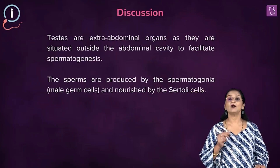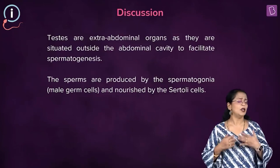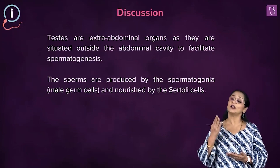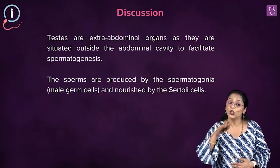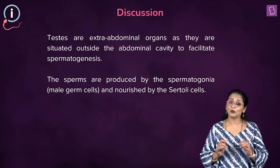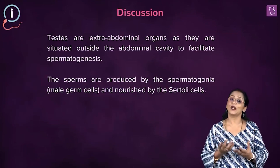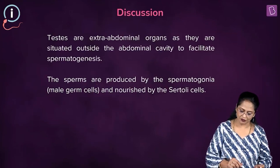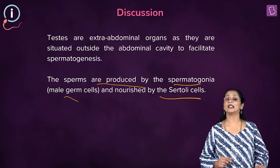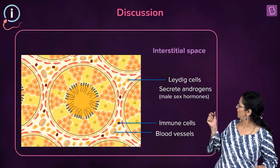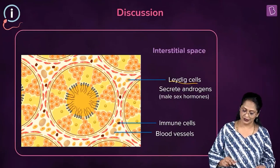The testis are found outside the body in pouch-like structures called the scrotum, because spermatogenesis can only take place when the temperature is maintained about 2 to 2.5 degrees lower than the body temperature. The sperms produced by the spermatogonia or male germ cells are nourished by the Sertoli cells, also called nurse cells. Here is a cross section of the seminiferous tubules — you can see the Leydig cells found outside the seminiferous tubules.